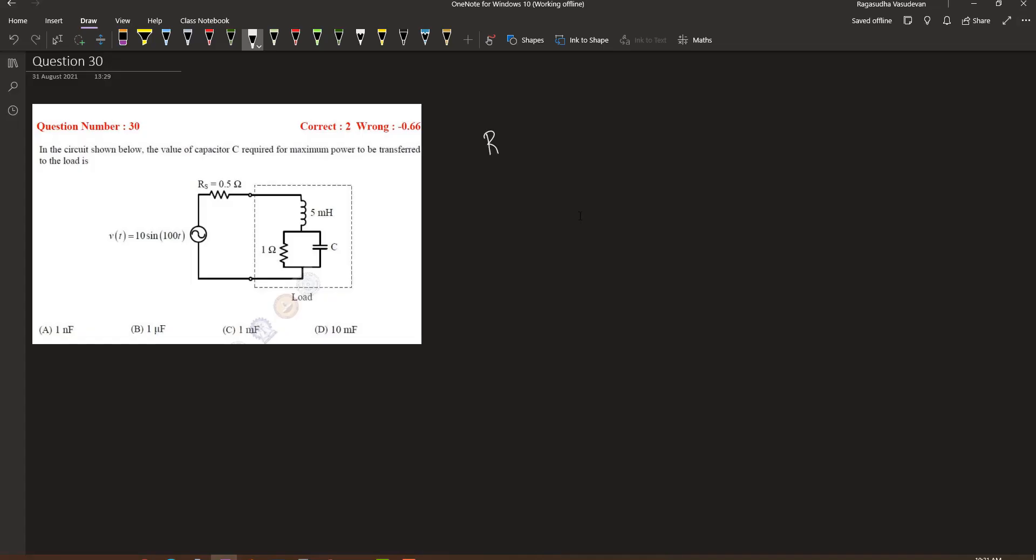Here it is given that the source's internal resistance is 0.5 ohm. So we must ensure that the load resistance is equal to 0.5 ohm and the reactance of this load should be zero.